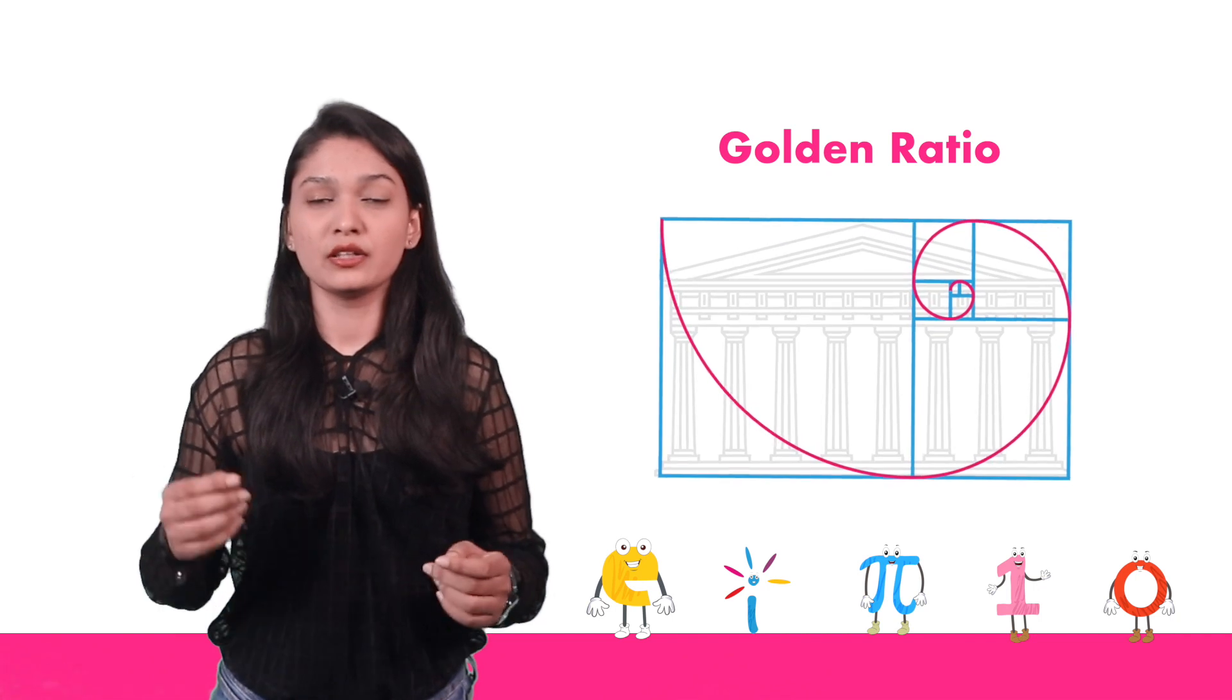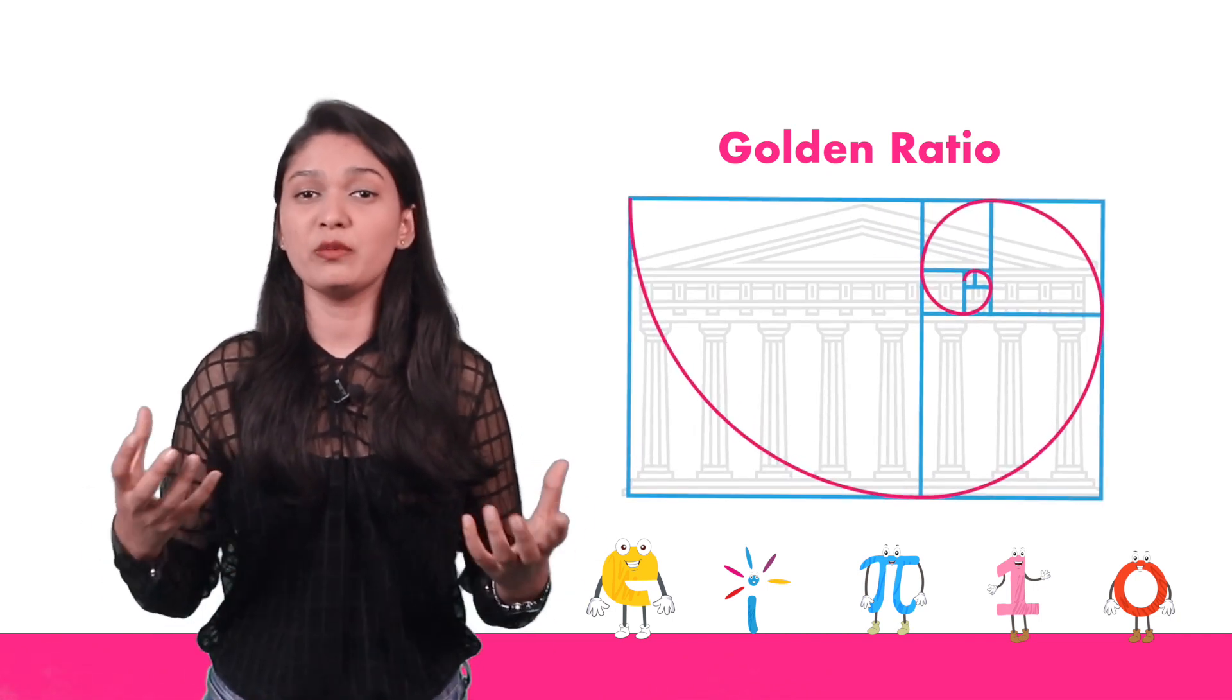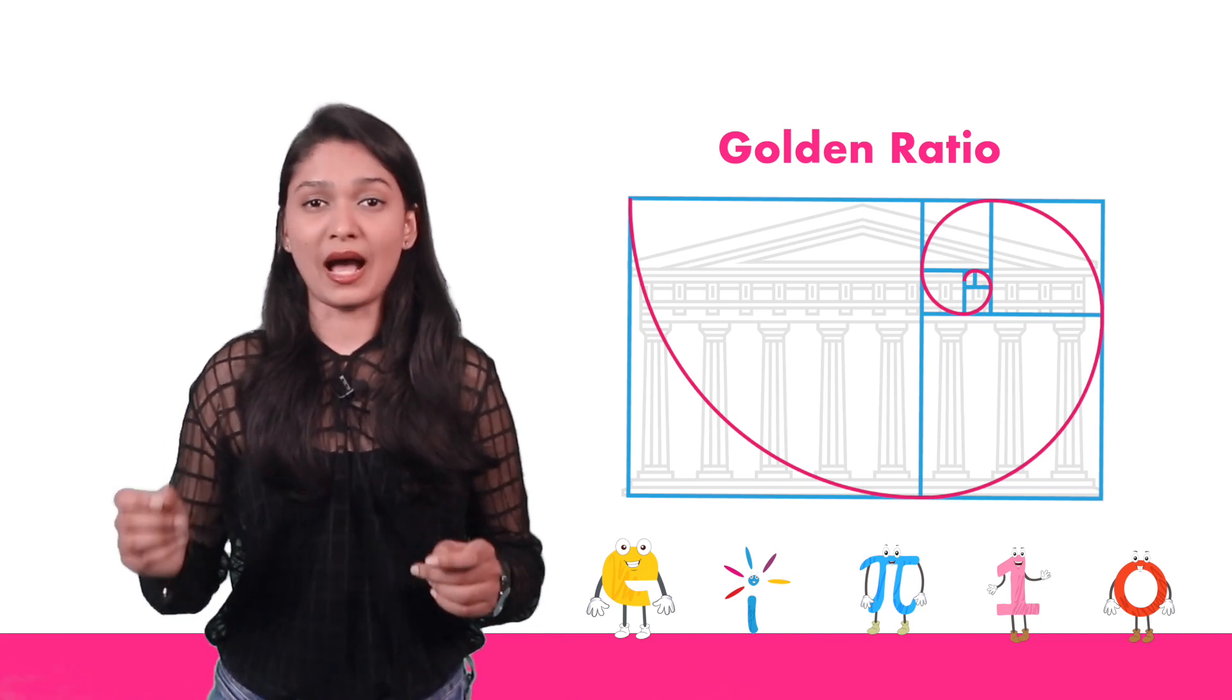The golden ratio is used to design the proportions so that the building or the architecture looks very pleasing to the eyes and at the same time they are balanced.